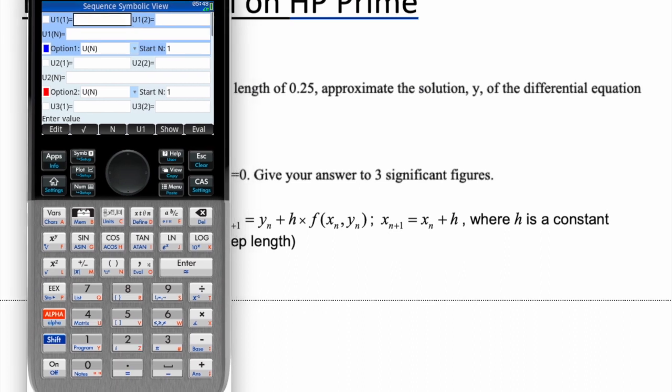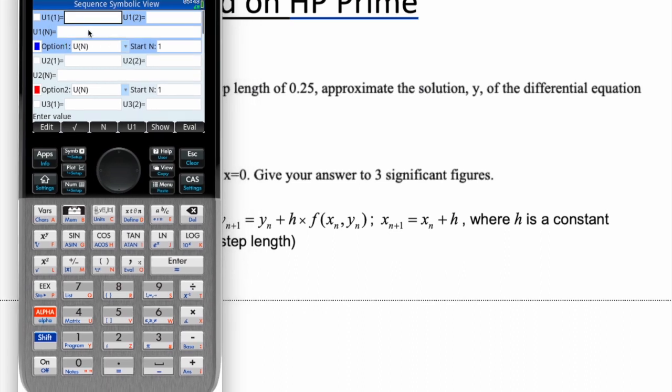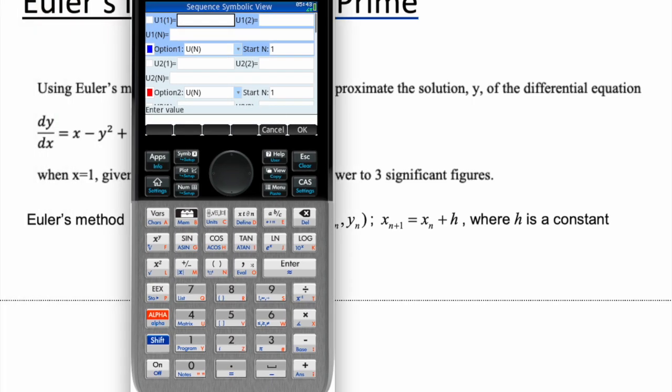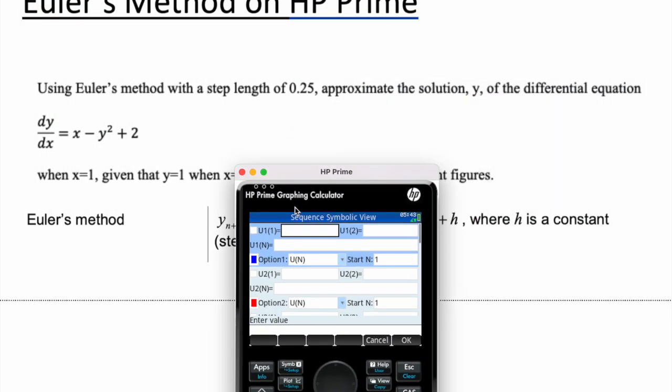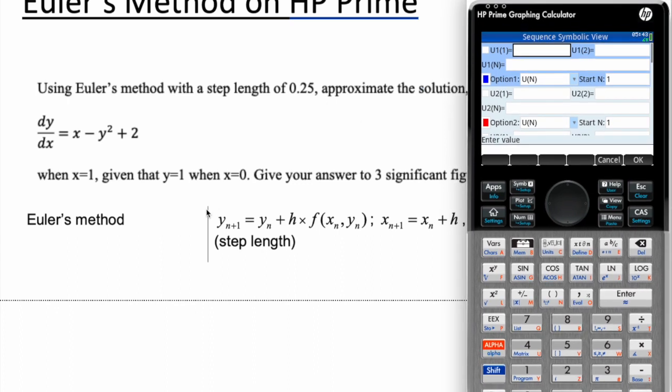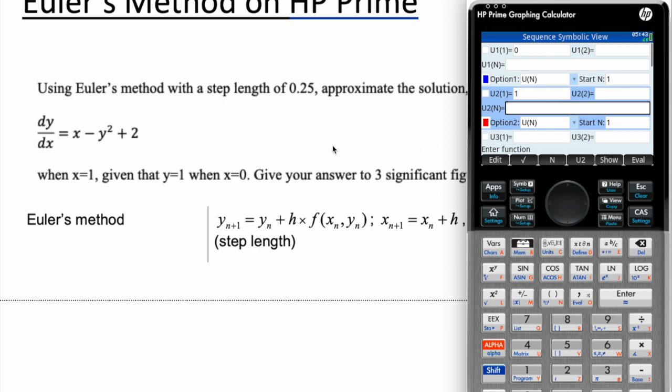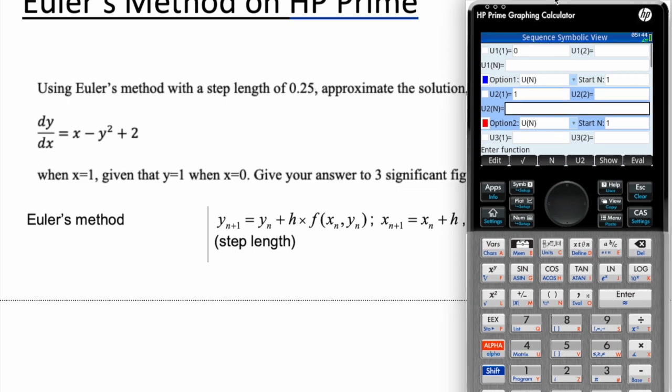So we're going to put in the initial x value, which in this case is 0. And the initial y value is 1. So we're going to put in 0 here. And for the initial y value, we're going to put in 1. These are given in the question. Step size is 0.25. So we're going to see how to incorporate that now in a second.